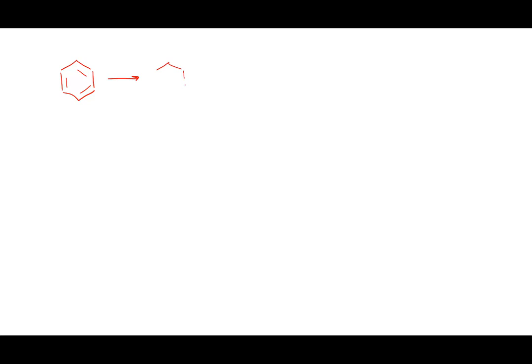We'll start with our benzene ring and add an aldehyde to make what's called benzaldehyde. We cannot — and I can't stress this enough — just do a Friedel-Crafts acylation and add the aldehyde as an acyl group. The problem is this doesn't work because forming that acyl carbocation is too unstable.